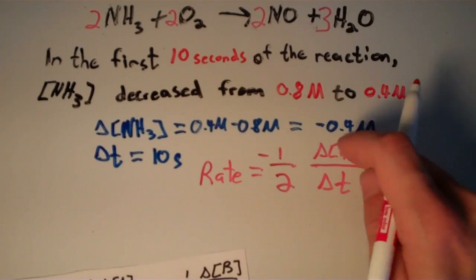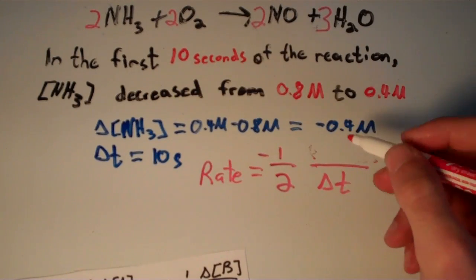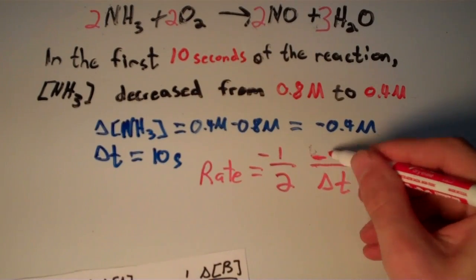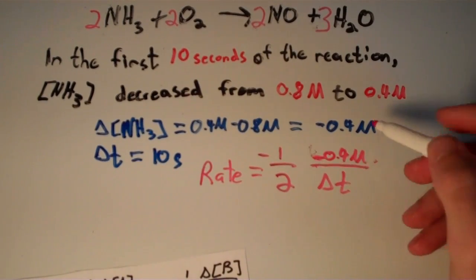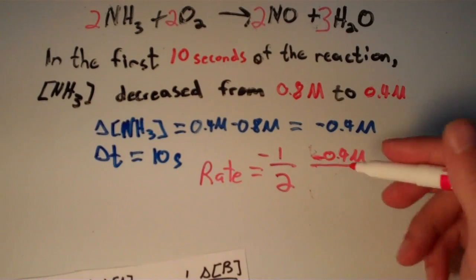We said that delta concentration of NH3 is going to be negative 0.4 molar. That's from this. And then our delta T, of course, is just 10 seconds.